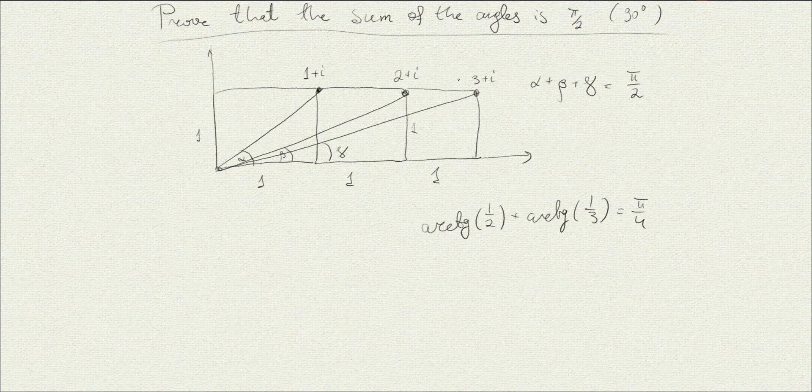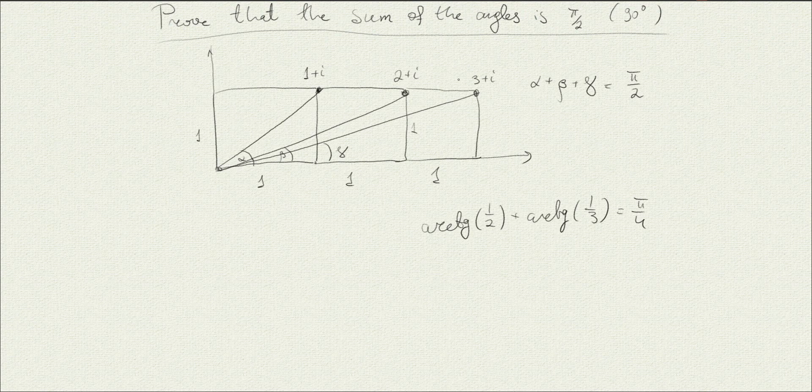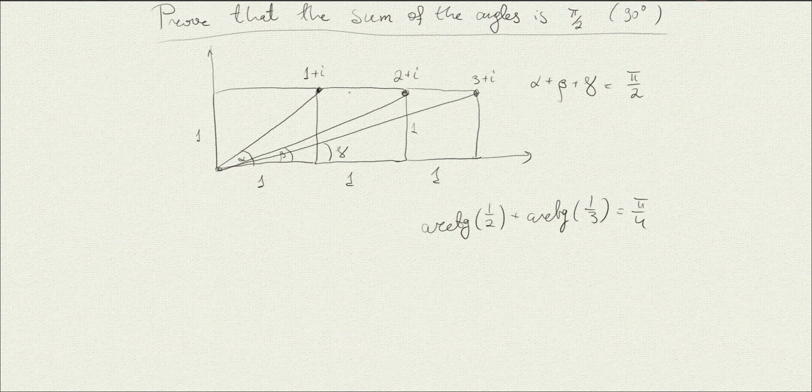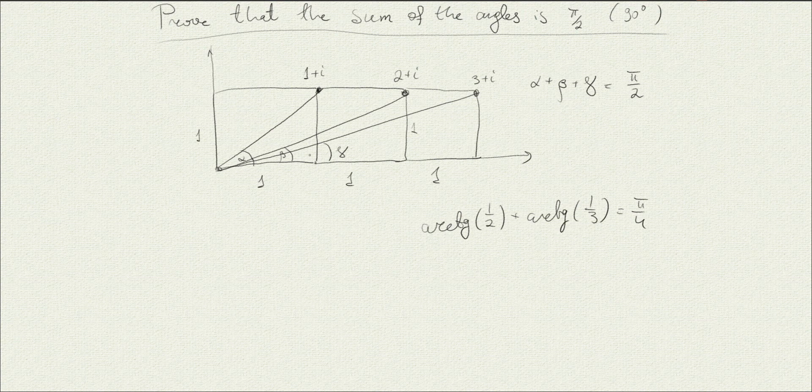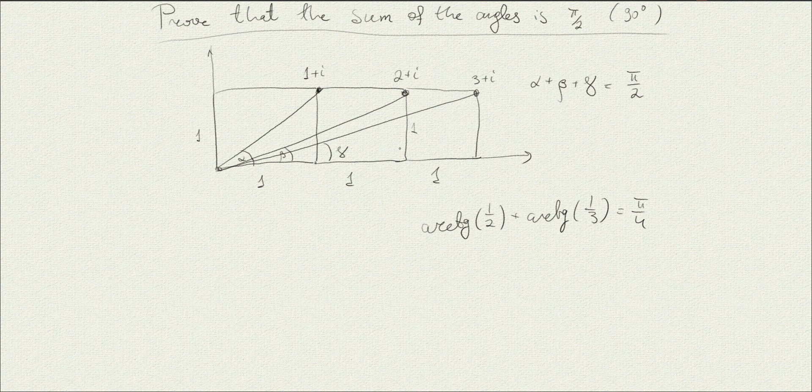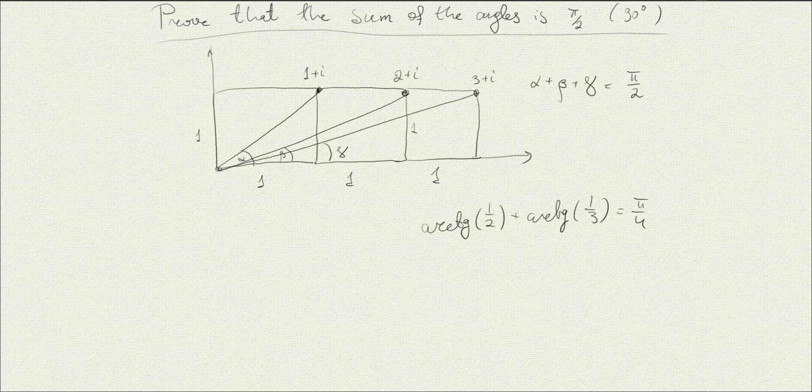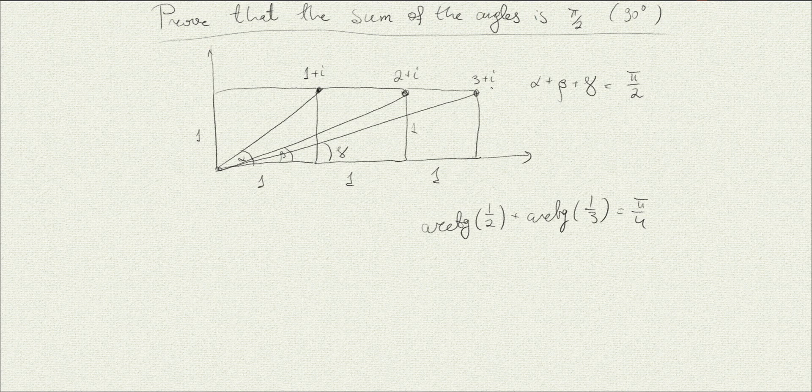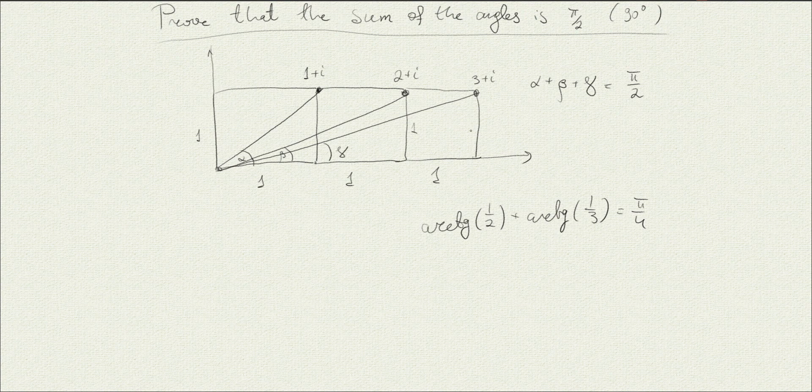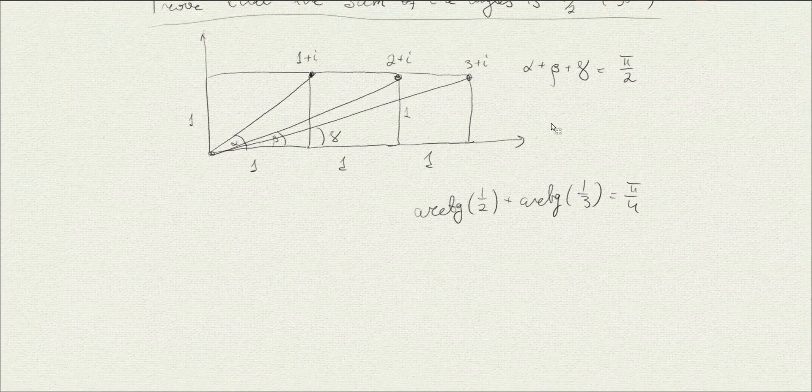But if we think about it this way, then what we need to prove that once we multiply all those three numbers, then the argument of the result will be the sum of the angles alpha plus beta plus gamma on the one hand. And so it's clear from here that it would be enough to show that the product of all those three numbers is a purely imaginary number with a positive imaginary component.